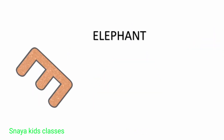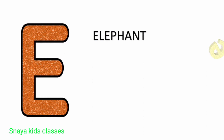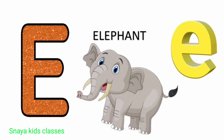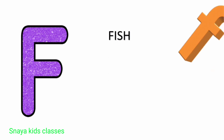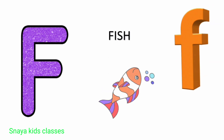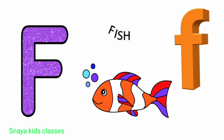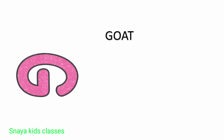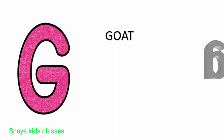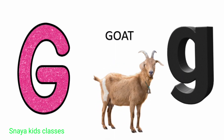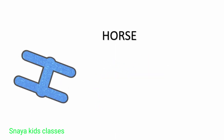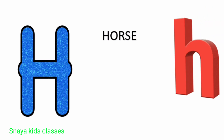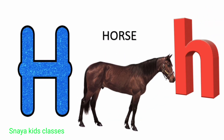E. E for elephant. F. F for fish. G. G for goat. H. H for horse.